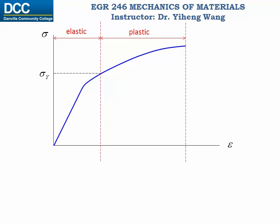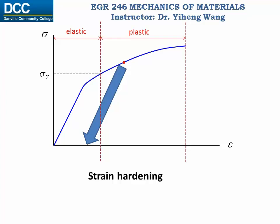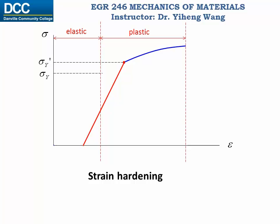If we want to increase the yield point for a ductile material, we can do a mechanical modification called strain hardening. We load the material to a point past its original yield stress, at which point the material will already have permanent deformation. When we unload it, it will not follow the original diagram because some deformation cannot be fully restored. This permanently changes the stress-strain behavior of the material and increases the yield stress. During unloading, the part of deformation the material was able to restore is called elastic recovery, and the deformation that cannot be restored is called permanent set.